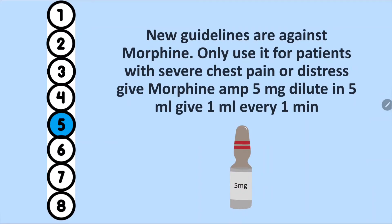New guidelines are against routine morphine use. Previously it was given, but current evidence shows morphine can increase mortality and morbidity in acute heart failure. It is only used when there is very severe chest pain or distress, at a dose of approximately 5 mg.